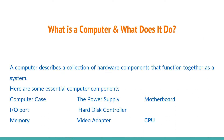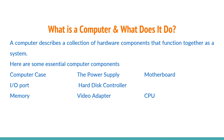What is a computer and what does it do? A computer describes a collection of hardware and software components that function together as a system.